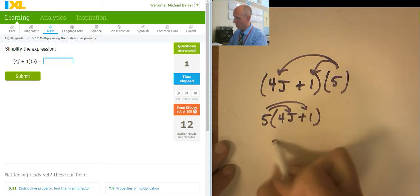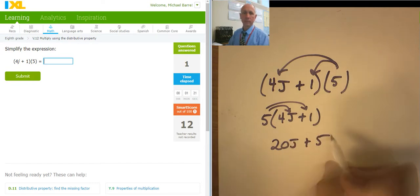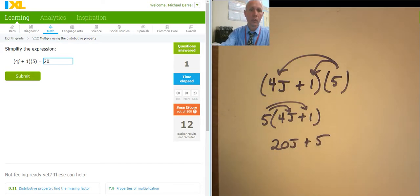So this is going to be 20J plus 5. 20J plus 5.